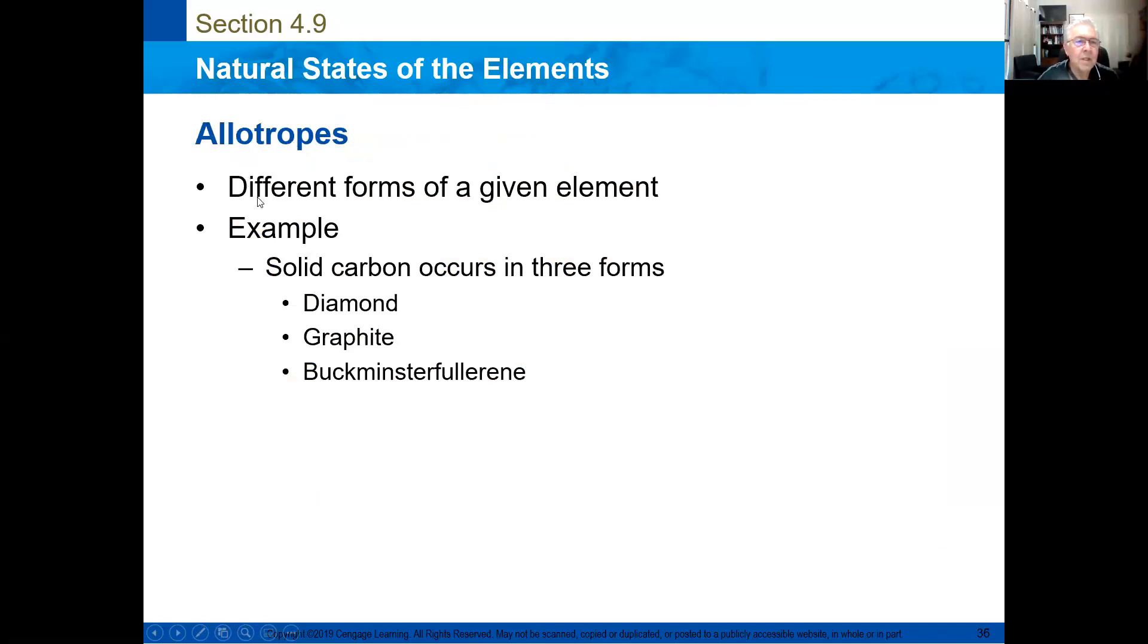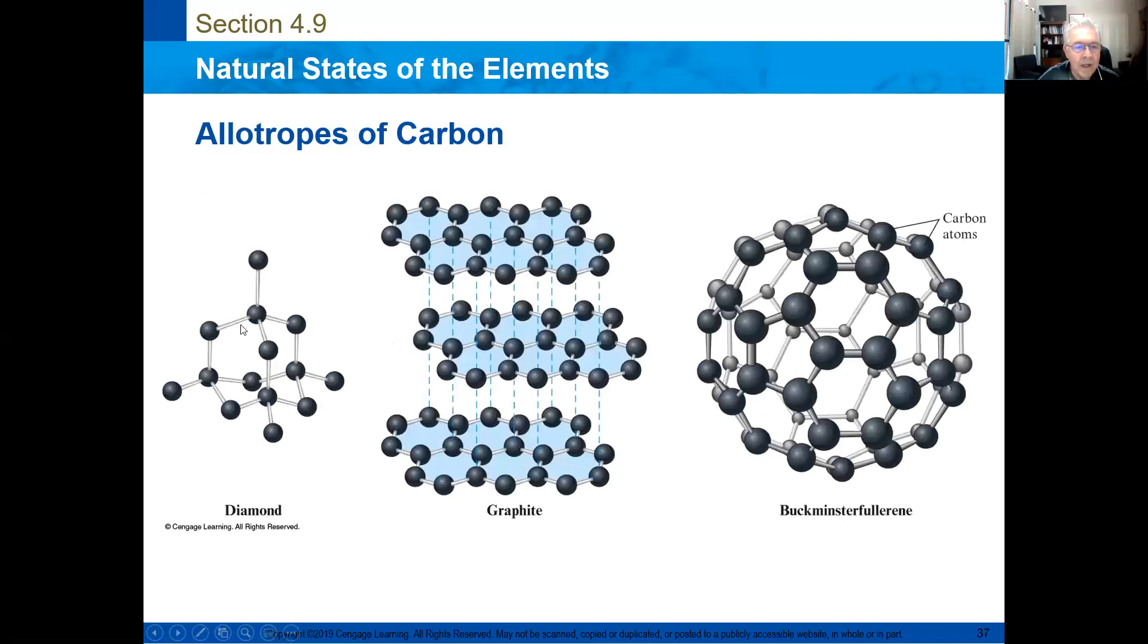The allotropes are different forms of a given element. For example, carbon can be in three different ways. Diamond, graphite, and this compound that you can find here. Here you can see the distribution of the atoms in the space for diamond. That makes a very hard structure. Maybe one of the hardest in the environment. While graphite is made of layers. And this is the Buckminsterfullerene.